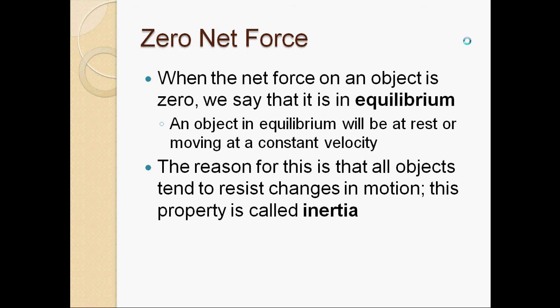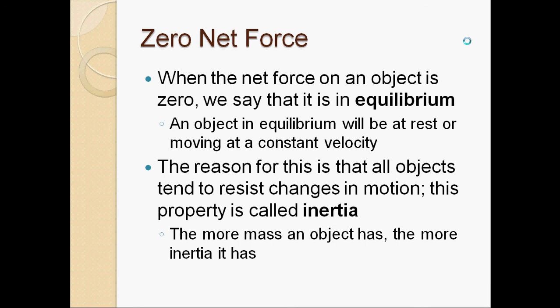The reason objects keep doing what they're doing is that all matter has an inherent quality called inertia — the tendency to resist changes in motion. Think about which is easier to change the motion of: a freight train or a butterfly. The amount of inertia depends on mass. The more massive an object, the harder it is to start moving or stop it. Mass can be thought of as a measure of the amount of inertia something has.